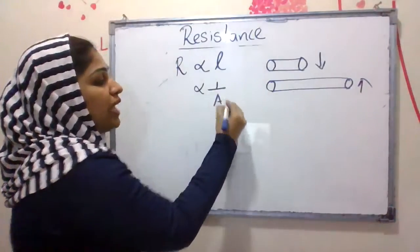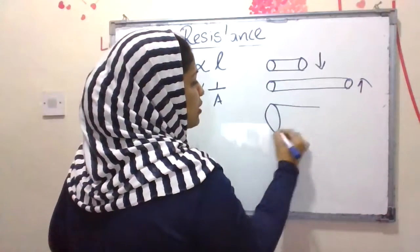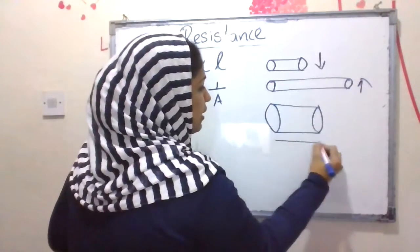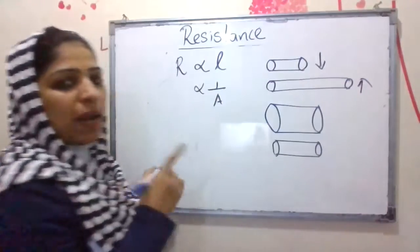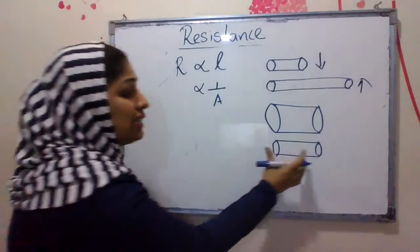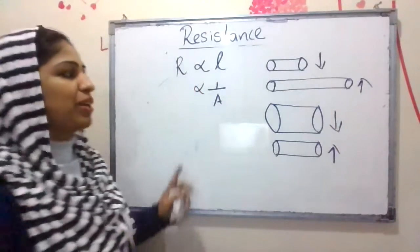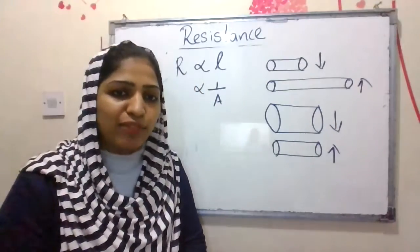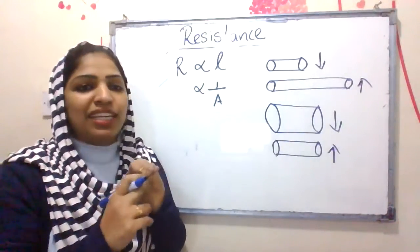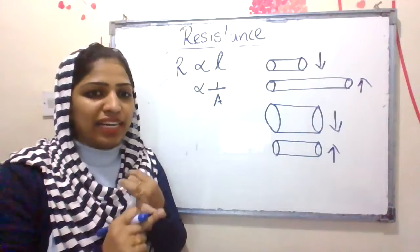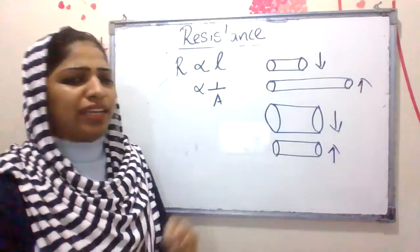Resistance is inversely proportional to area of cross-section. If we have two metallic wires of the same length — one thin and one thick — a thin wire has more resistance and a thick wire has less resistance, because resistance is inversely proportional to area of cross-section. So resistance depends on two factors: length of the conductor and area of cross-section — directly proportional to length, inversely proportional to area.